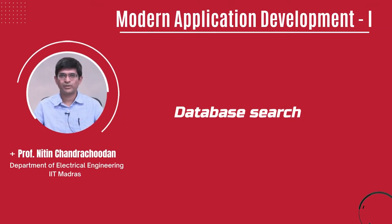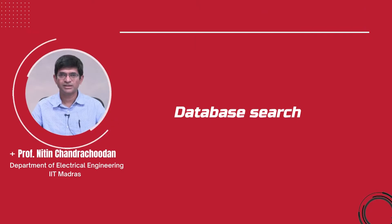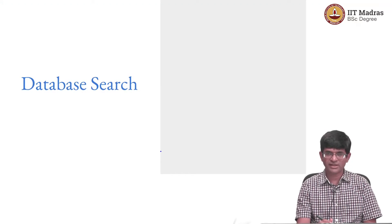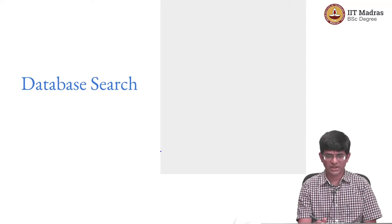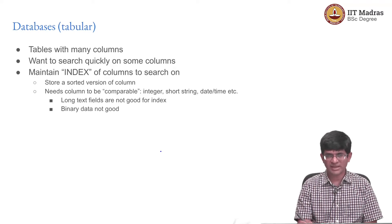Hello everyone and welcome to this course on Modern Application Development. What do all of these things we considered in terms of searching for data in some storage mechanism have to do with searching in a database? The most common databases have a so-called tabular structure — there are many tables, each of which has many columns.